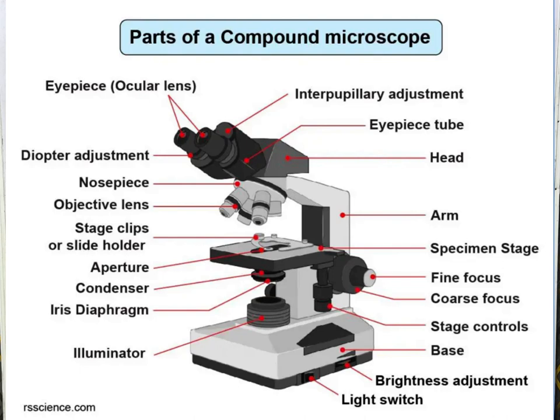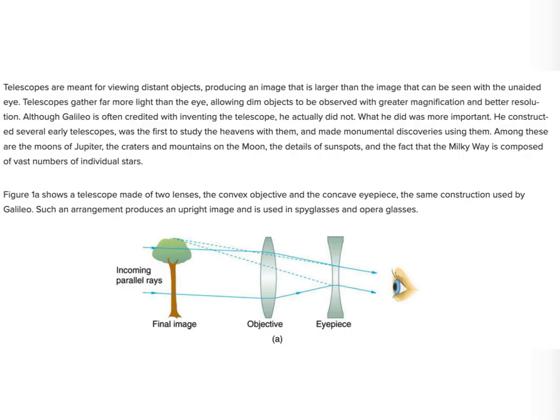The modified compound microscope is not something that is rocket science. What you should know about the modified compound microscope is that the final image is at the near point of the eye, and it is within the lens. The eyepiece is also made from a combination of lenses to reduce distortion. What you'll be asked in an exam is: why is the eyepiece of the modified compound microscope made up of a combination of lenses? You'll say it is simply to reduce distortion.